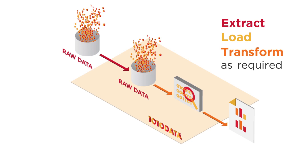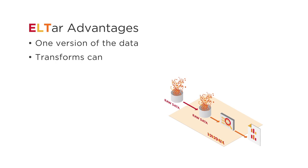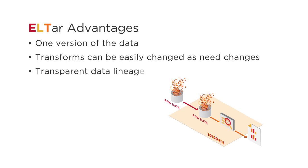This gives us several advantages. First, we only need one version of the raw data to support transformations and queries. We can also easily change transformations by changing the saved logic. As business needs change, we rapidly adjust transformations with no changes to logical or physical schemas. Finally, data lineage is completely transparent — any analyst can design, create, and review all data changes.